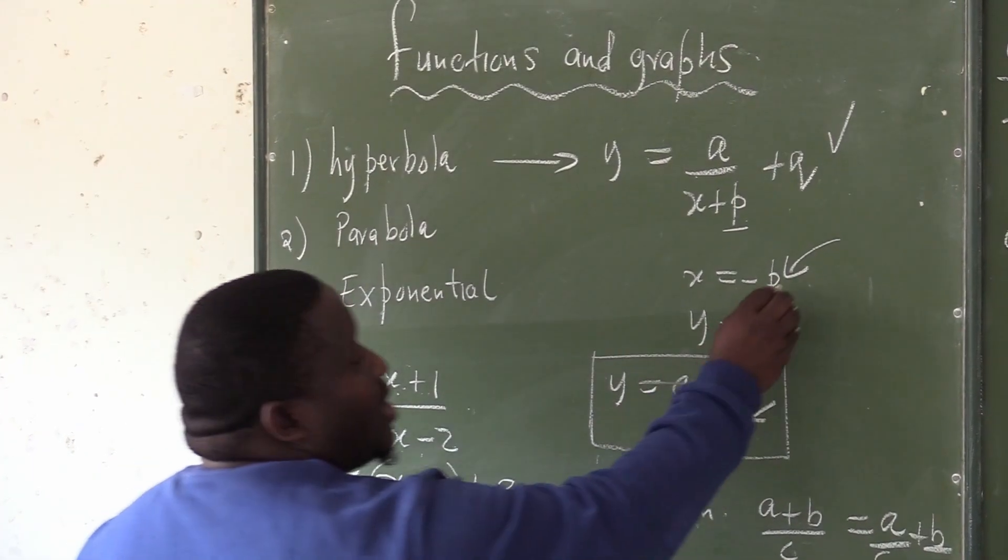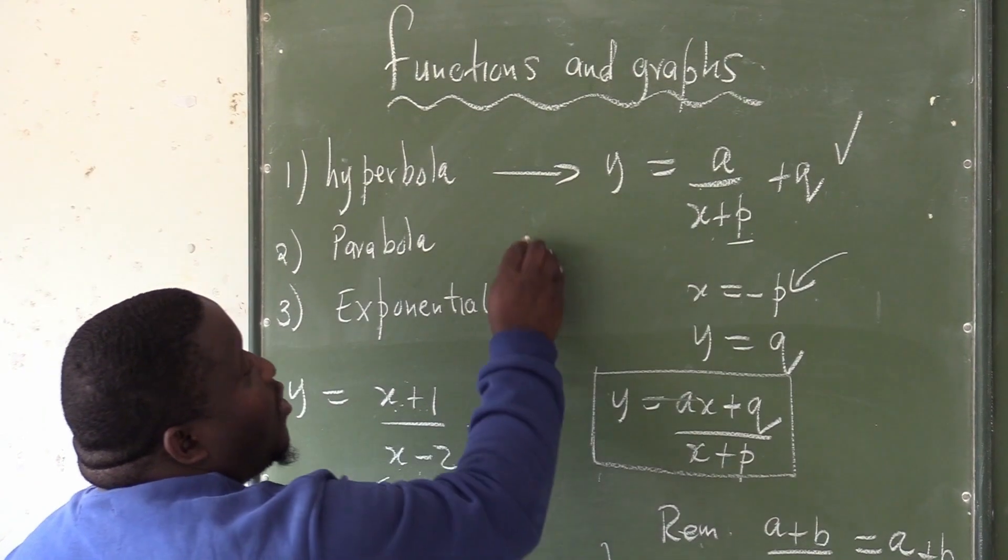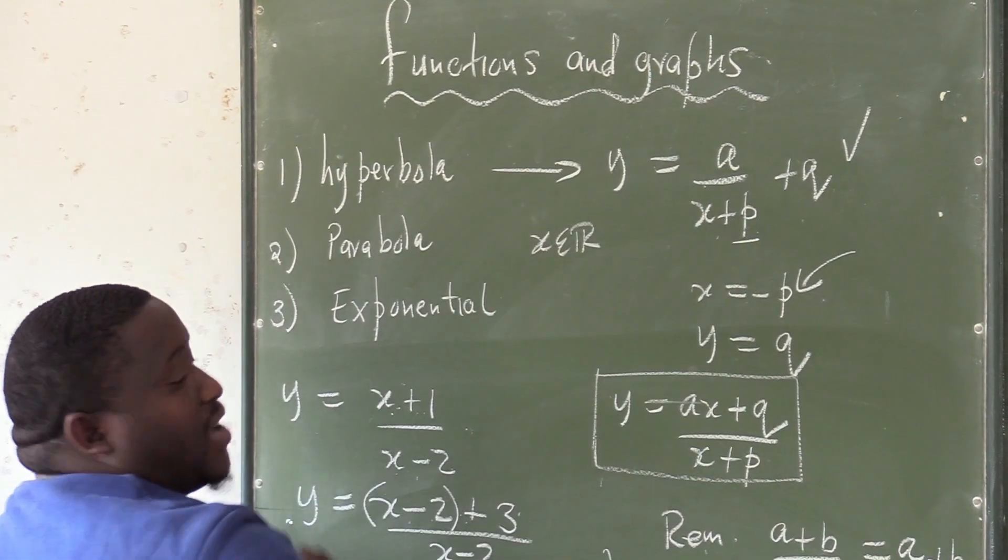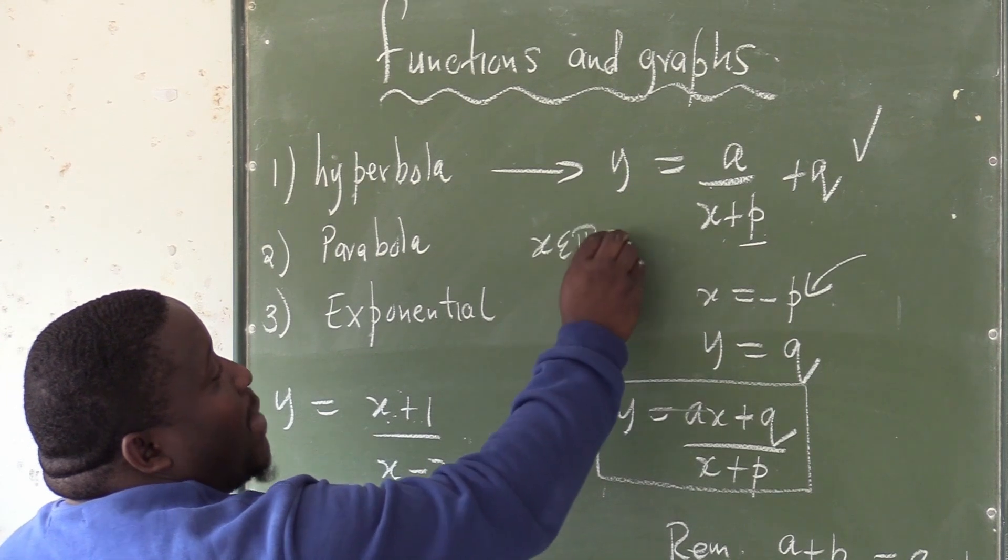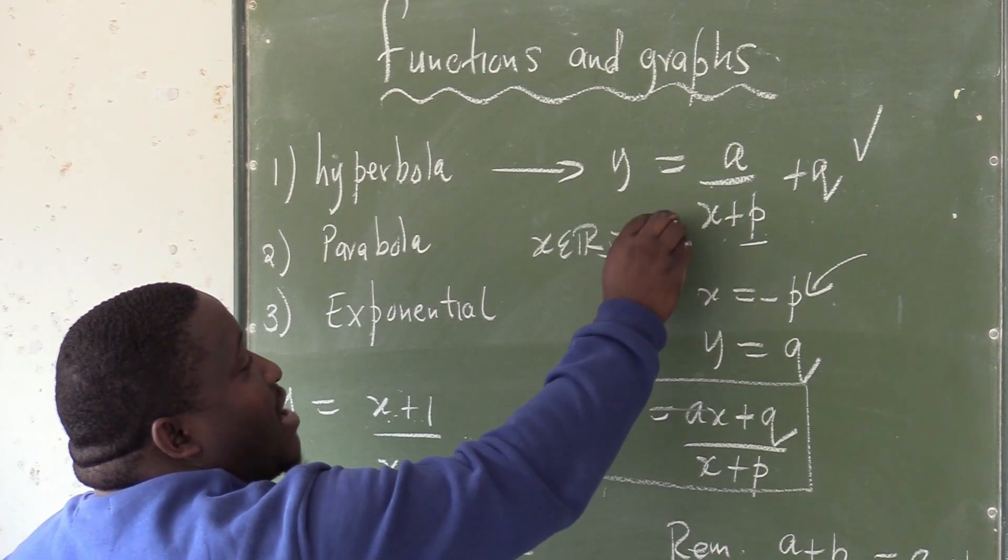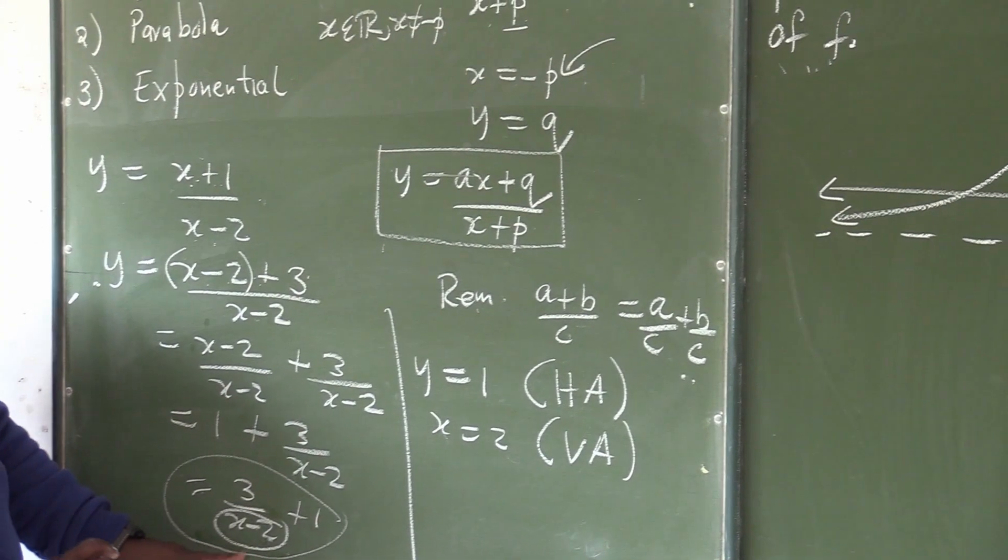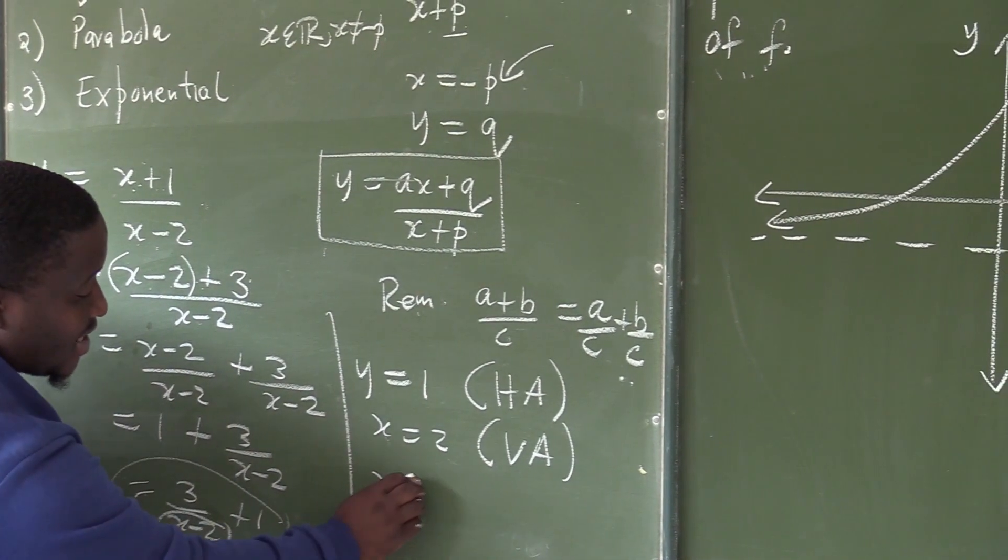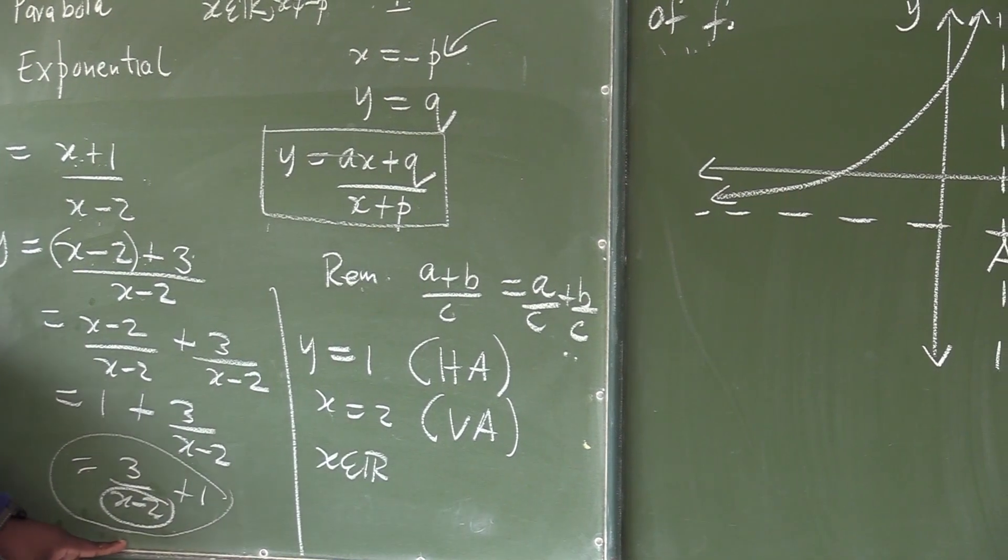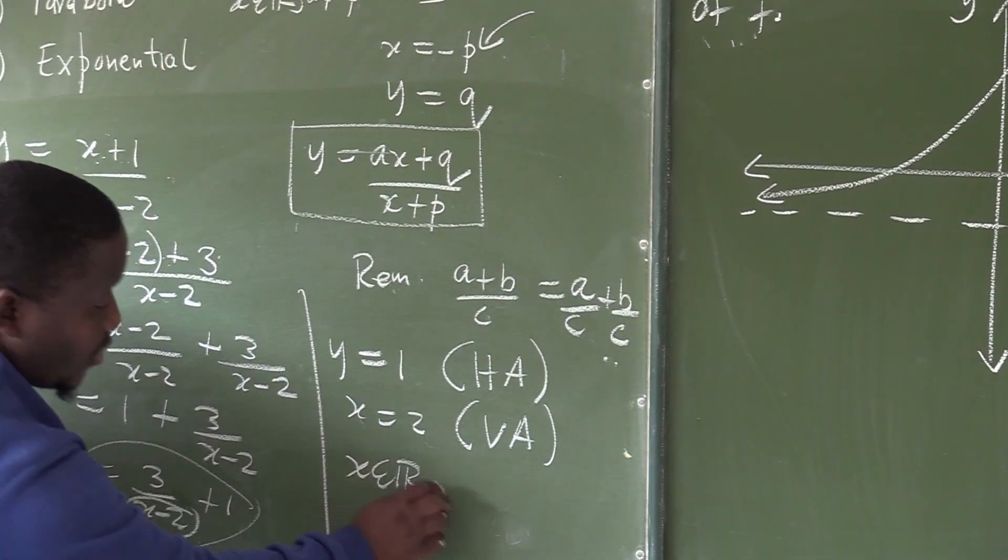When I say what is the domain in this graph, you are going to say X is an element of real numbers, but my X cannot be the vertical asymptote. In this case, it's minus P. What is going to be my domain here? It's going to say X is an element of real numbers, right? But what is my vertical asymptote? Then you say...